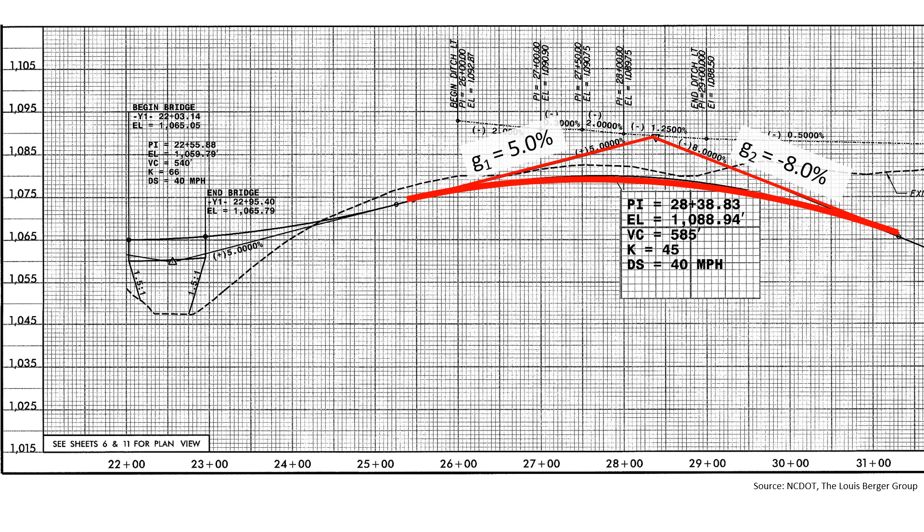I'm going to zoom in on this curve information a little bit closer. We have a station of our PVI 28 plus 38.83 with an elevation of 1,088.94. The length is 585 feet, which is 5.85 stations.